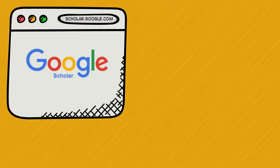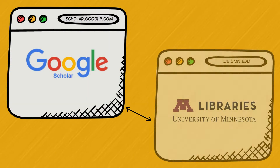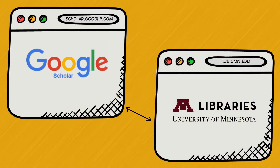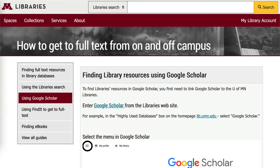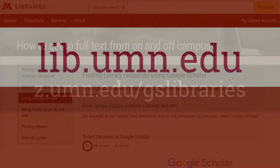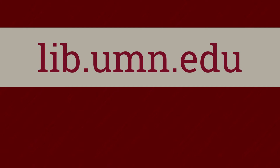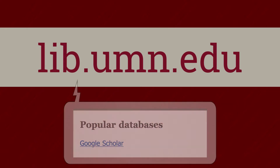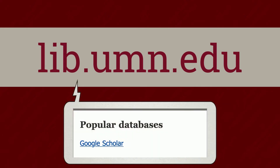You will want to be sure that Google Scholar is connected to the University of Minnesota Libraries so that you can get access to the full text of the articles you want. To do this, follow the instructions found at z.umn.edu/gslibraries. Google Scholar is linked on the library's homepage, lib.umn.edu, under Popular Databases.